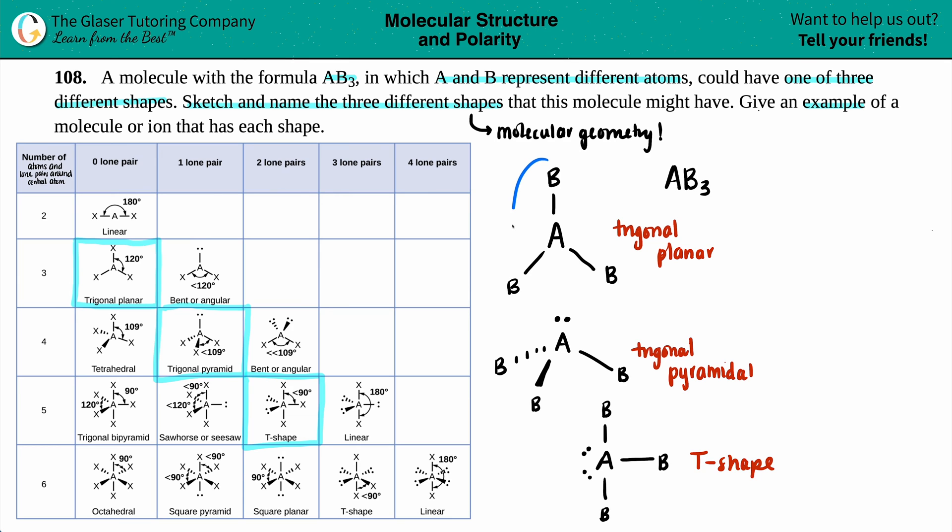So the first one, we'll say to ourselves, okay, what central atom would be happy if it had three bonds? It seems like this one doesn't have the octet, right?